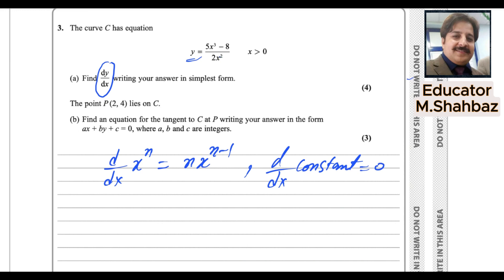you have to bring the variables in the numerator. Here 2x² is in the denominator. So you have to simplify them. So how to simplify them? You can split the denominator.